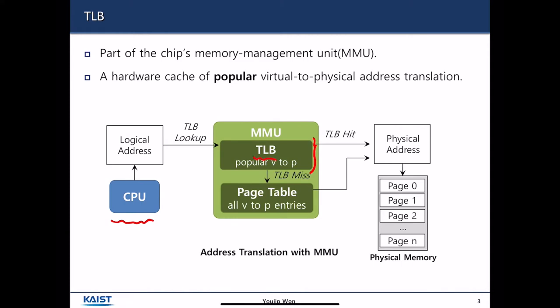When you perform address translation, first the CPU performs a TLB lookup. If there is a TLB hit, then it finds the physical address. If there is a TLB miss, then it consults memory and looks at the page table to find the associated physical page frame. That is the process of translating the address from virtual address space to the physical address space.